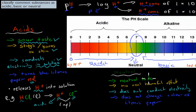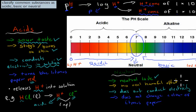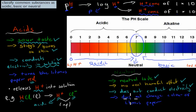Neutral substances have no sour taste — they have a neutral taste. They have no real harmful effect, unlike acids and bases. They do not conduct electricity, and they do not change the color of litmus paper — red litmus stays red, and blue litmus stays blue.